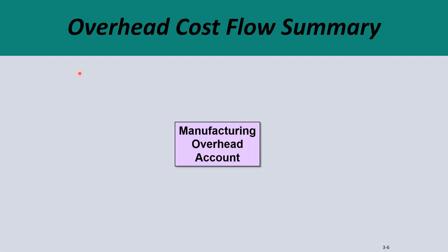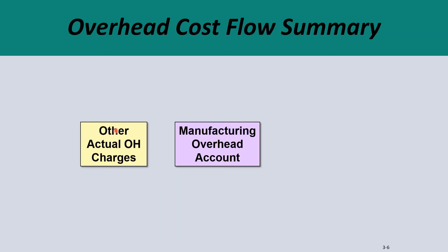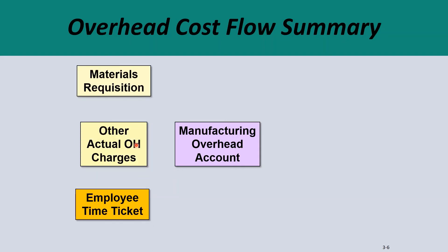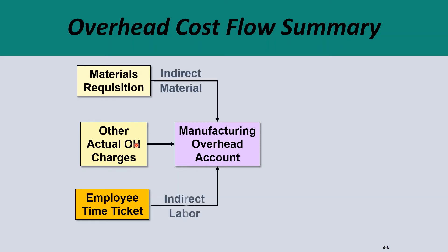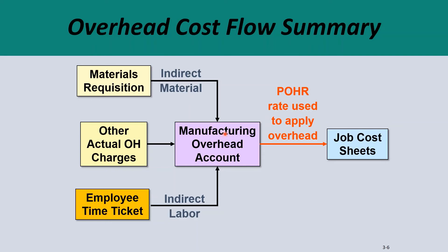For the overhead cost flow summary, we have the manufacturing overhead account, and all the actual overhead charges are debited into it. The employee time ticket with indirect labor is also debited to the manufacturing overhead account. All the indirect materials from the raw materials account are also transferred to the manufacturing overhead account. So the manufacturing overhead account is like a big pool into which all overheads are accumulated.